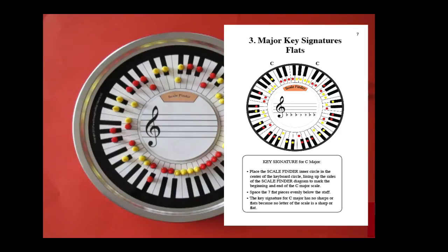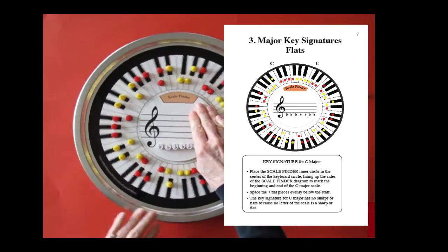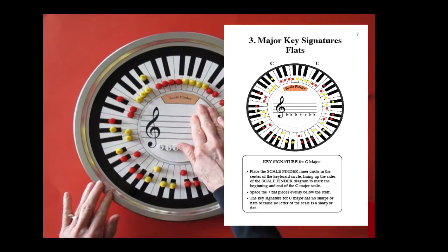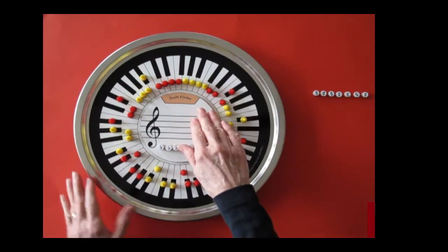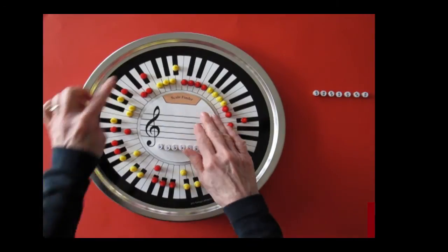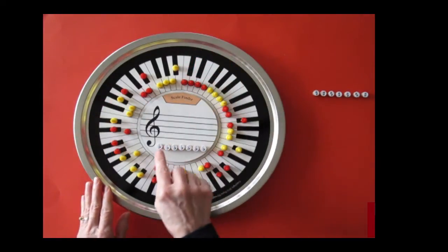Just as there are seven key signatures with sharps, there are seven key signatures with flats. As before, begin by finding the C major scale, but this time rotate clockwise to the beginning of the tetrachord to the left. The scale is F major.